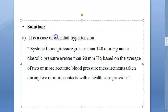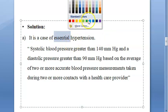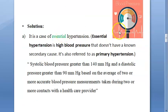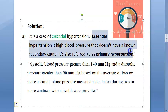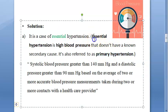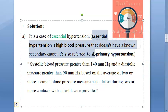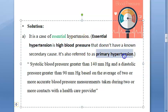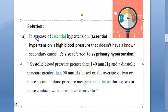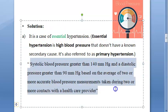It is a case of essential hypertension. What is essential hypertension? Essential hypertension means it is primary hypertension — there is no secondary cause. People just develop it without any other cause. So essential hypertension is primary hypertension; it doesn't have a known secondary cause.